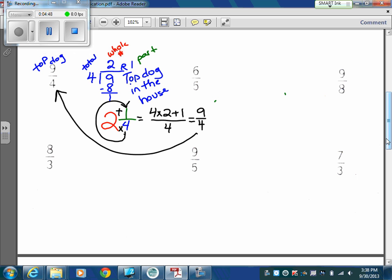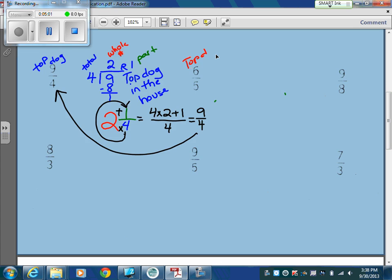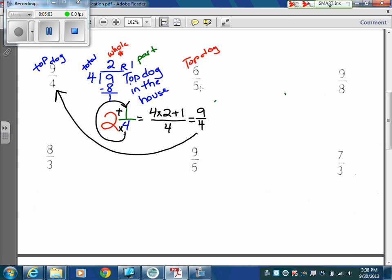Okay, let's go down to, or let's go over to six fifths. Pause the video, try one on your own, then come back and check with me. Okay, six fifths, we've got top dog. And if we're writing, should be in the house. Denominator is outside. Divide, that goes in once, remainder one.